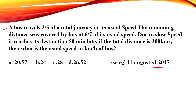I will present two methods. First method. A bus travels 2/5 of the total journey at its usual speed. The remaining distance was covered by the bus at 6/7 of its usual speed. Due to the slow speed, it reaches its destination 50 minutes late. If the total distance is 200 km, then what is the usual speed in km per hour of the bus?